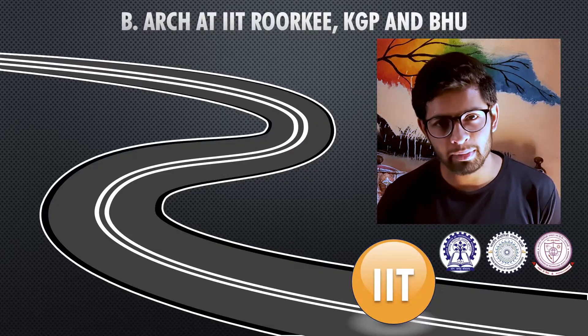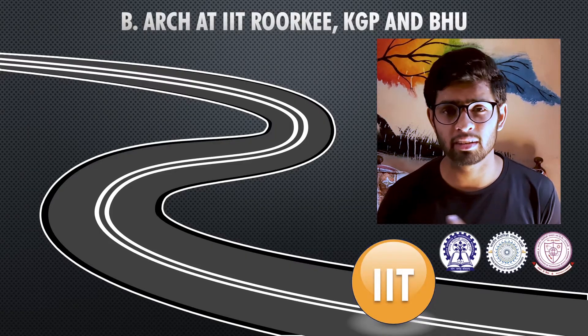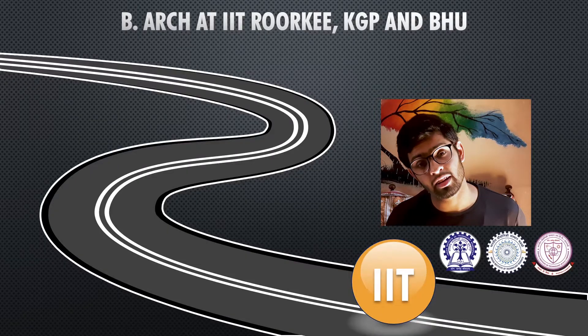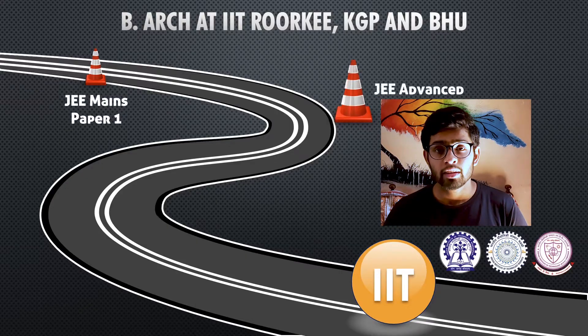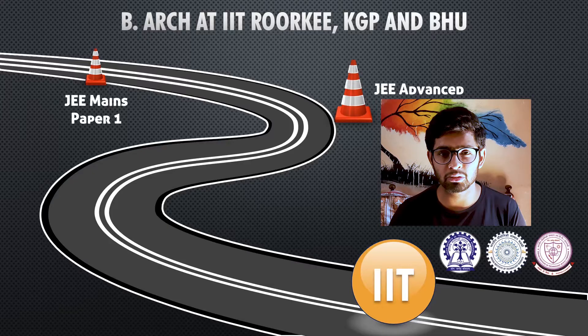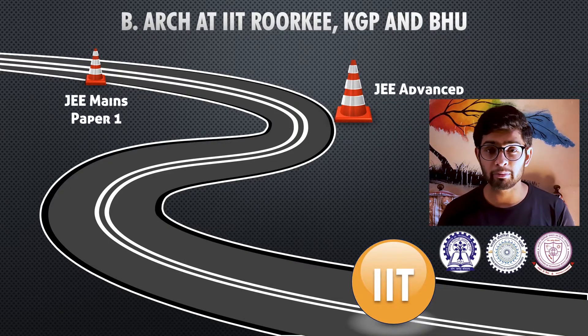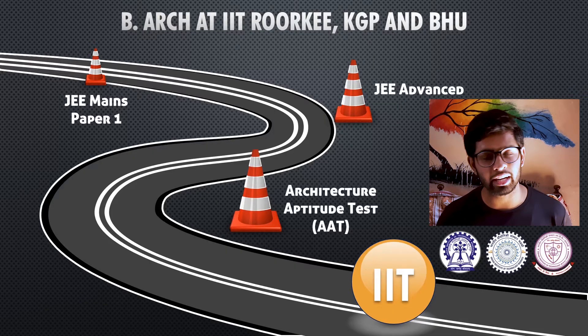You can see the roadmap to get into IITs. Architecture branches are only in three IITs: IIT Roorkee, IIT BHU, and IIT Kharagpur. First of all, let's see how we get into IITs. First, you need to clear JEE Main Paper 1, then JEE Advanced. JEE Main Paper 1's rank doesn't matter at all — you just need to clear the cutoff. If you clear the cutoff of JEE Advanced, then you can sit for AAT, the Architecture Aptitude Test.